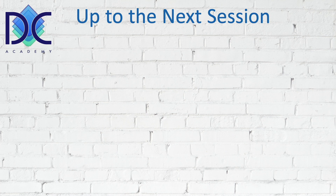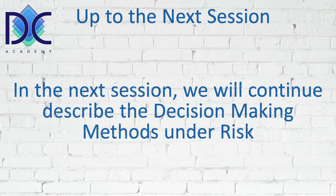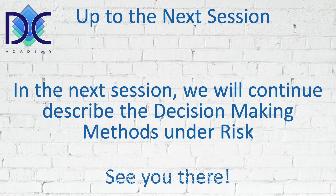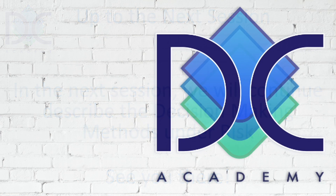To summarize, we covered four decision-making methods under uncertainty: maximax, minimax, Laplace, and least regret. In the next session, we will add probabilities to events — what is the probability that a certain event will happen — and we'll be talking about decision-making methods under risk. Thank you and see you in the next video.